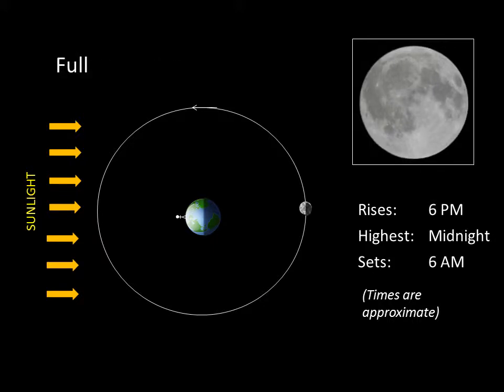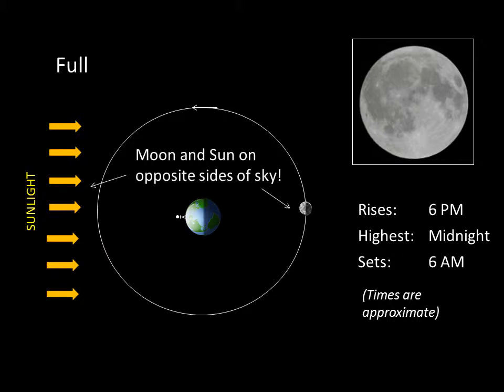Two weeks after our new Moon, the Moon is full. It's on the opposite side of the sky as the Sun, so we see its entire illuminated half. A full Moon rises in the east as the Sun sets in the west and is out all night. The full Moon will set in the west as the Sun is rising in the east.